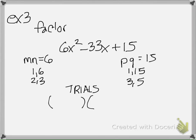I have a minus plus which means this is going to be a negative negative situation. So the first one is x, 6, and then my pq I can do 1 and 15, or I could do 6x minus 1 and x minus 15.